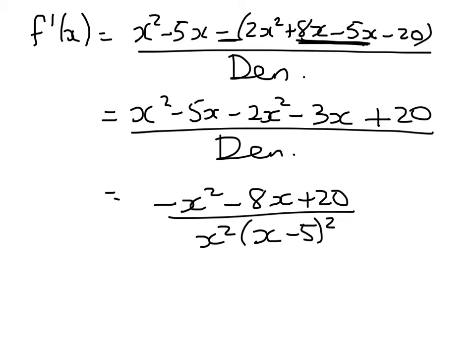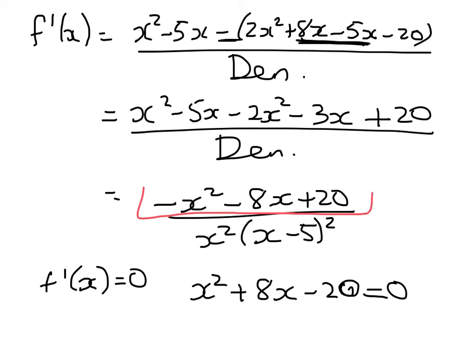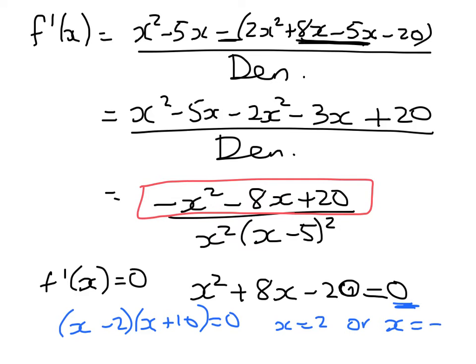So we're looking for, it's parallel to the x-axis when the gradient's 0, so we're trying to solve this equation, x² + 8x - 20 equals 0. So I have taken the numerator and I've multiplied it through by negative 1. I can do that because I've got 0 on this side so it doesn't change anything. So factorising that, I get (x - 2)(x + 10) = 0, x equals 2 or x equals negative 10. And that's another merit question.